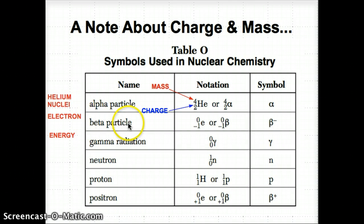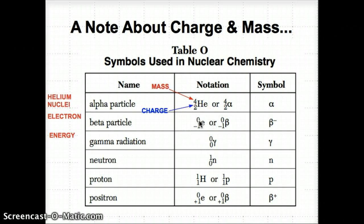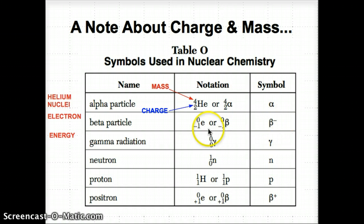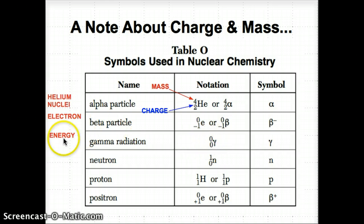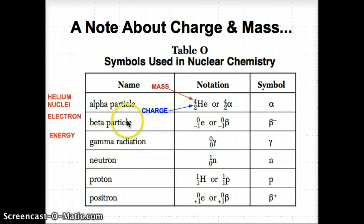The beta particle is actually known as an electron — the charge of an electron is always negative 1, and compared to the proton and neutron, it has no mass, so its mass is 0 AMU. The 'E' stands for electron. Beta minus uses the Greek letter beta, and the minus tells you it's an electron: charge of negative 1, mass of 0 AMU. Finally, gamma radiation has no charge and no mass — it's only energy, noted by the Greek letter gamma.